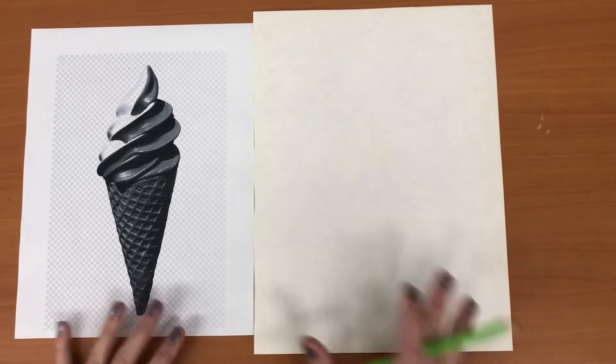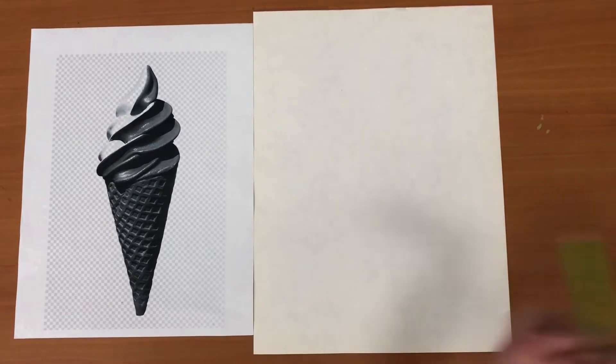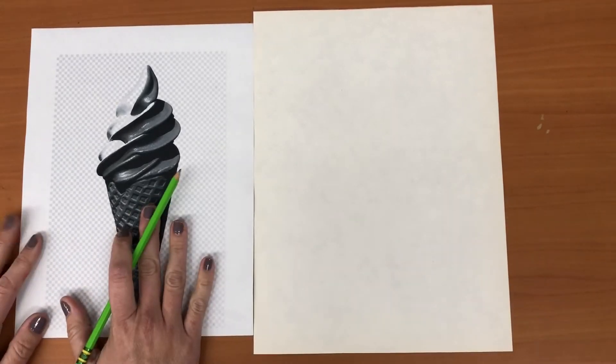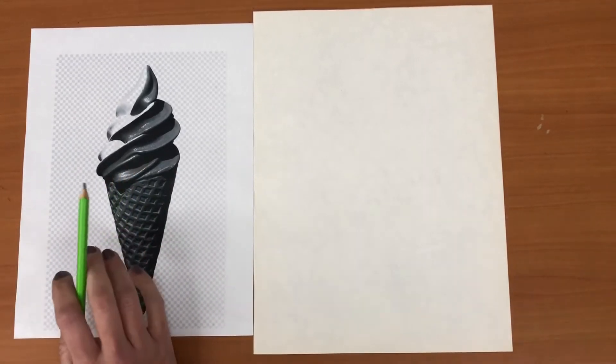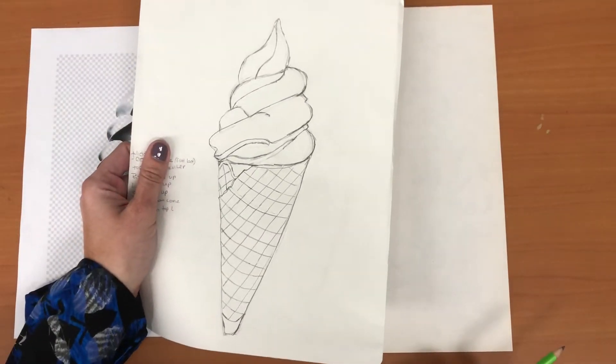So right now in front of you you should have a piece of just regular paper and then also you have your reference photo. When we finish your sketch will look something like this.